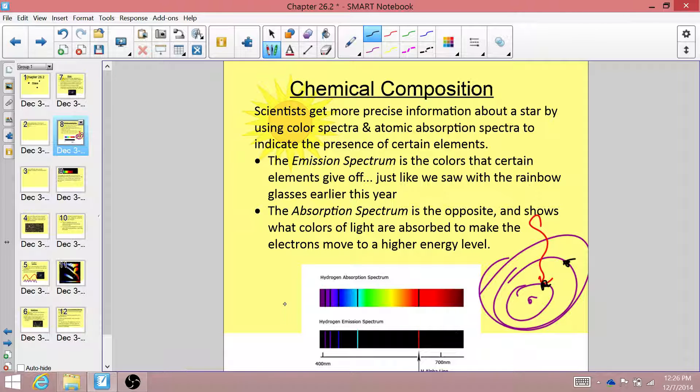So the emission spectrum is the color of light that gets released when the electron jumps down a level or multiple levels. And the absorption spectrum are the colors of light that get absorbed in order for it to jump up a level or multiple levels. And this is how scientists determine the chemical composition of the stars.